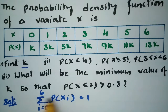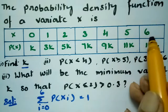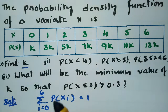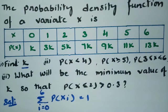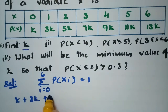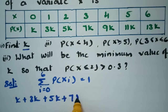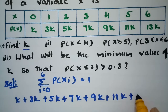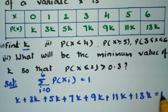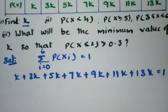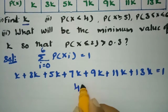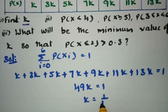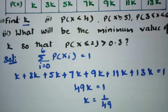Since the total probability from 0 to 6 must equal 1, we add all the k values: k + 3k + 5k + 7k + 9k + 11k + 13k = 1. Adding these gives 49k = 1, so the value of k is 1/49.